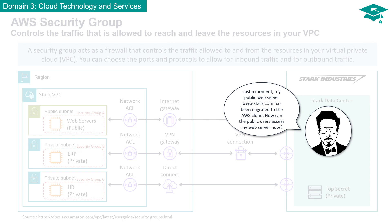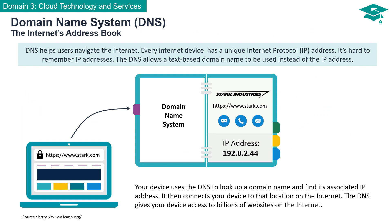My public web server www.stark.com has been migrated to the AWS Cloud. How can public users access my web server now? Introducing Domain Name System or DNS, the Internet's Address Book. Every Internet-connected device is assigned a unique Internet Protocol address; however, remembering these numerical combinations can be quite a challenge. DNS simplifies this process — whenever you enter a familiar web address like www.stark.com into your device, DNS looks up the user-friendly domain name, finds the corresponding IP address, and seamlessly connects your device to the desired location on the Internet.